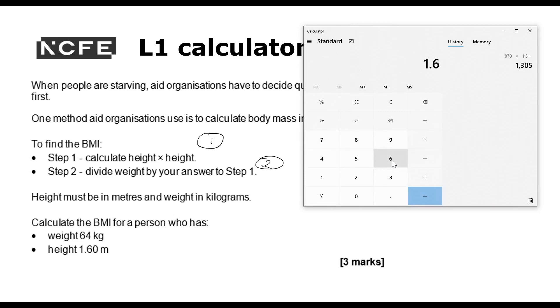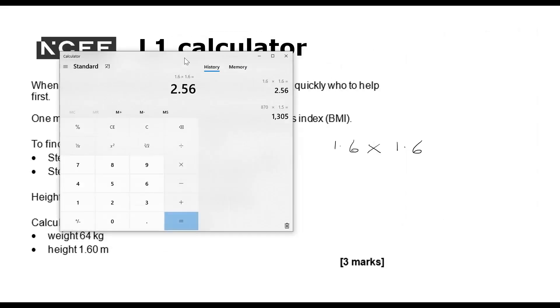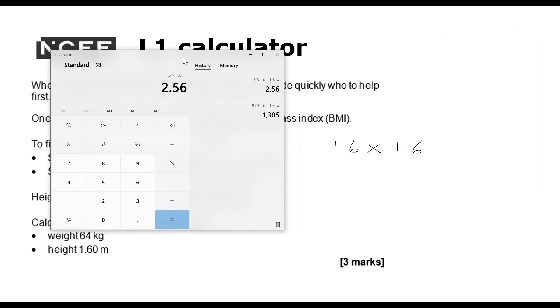And we've got 1.6. And using my knowledge of my calculator, I mean, this one does have a squared button. So I could click that, but a lot of basic calculators don't. If I just click times and equals, that will actually show me 1.6 times 1.6. So we've got 2.56 there.